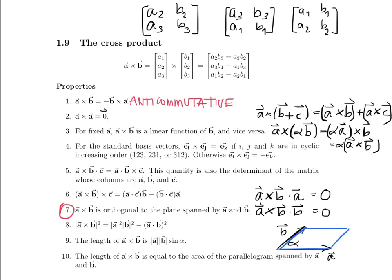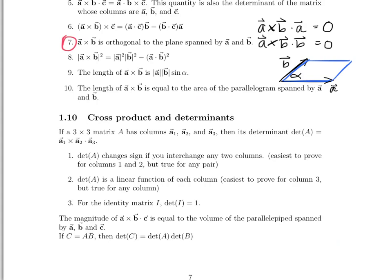Let's take another look at determinants. The cross product and the scalar triple product is a way to calculate the determinant of a 3 by 3 matrix. If you're looking at a 3 by 3 matrix A with columns A1, A2, and A3, the determinant equals A1 crossed with A2, dotted with A3. Note that the determinant changes sign if you swap any two columns — easiest to prove for columns one and two since the cross product anticommutes, but true for any two columns.